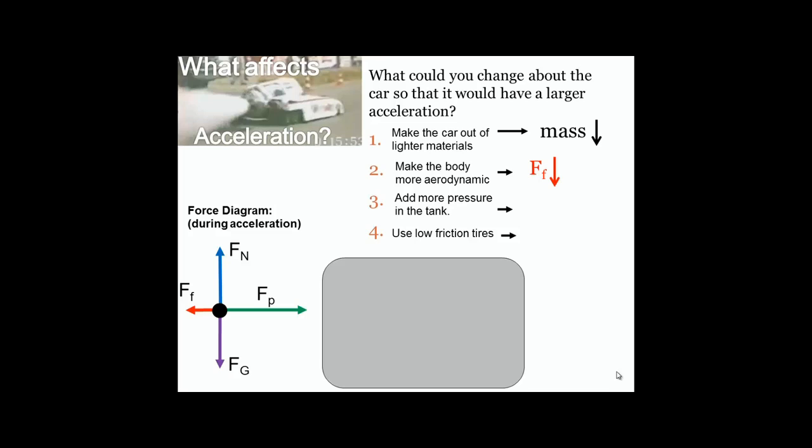If we add more pressure to the water inside that tank, what we're really doing in terms of forces is increasing that pushing force. And if we use low friction tires, we're reducing the frictional force in another way between the tires and the road rather than the body of the car and the air. So it looks like when we look at numbers one through four, there's three things that we could do to affect the acceleration or give it a larger acceleration: We could decrease the mass, we could decrease the frictional force, or we could increase the pushing force.